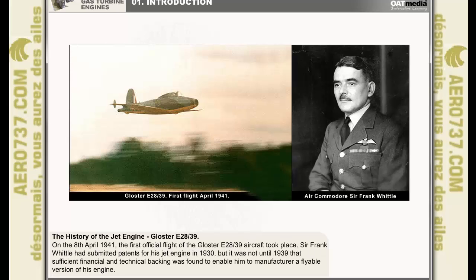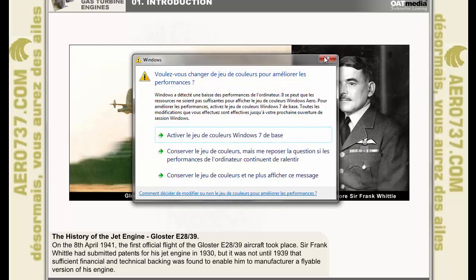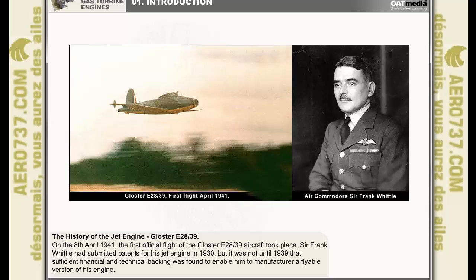On the 8th of April 1941, the first official flight of the Gloucester E2839 aircraft took place at Brockworth in Gloucestershire. Sir Frank Whittle had submitted patents for his jet engine in 1930, but it was not until 1939 that sufficient financial and technical backing was found to enable him to manufacture a flyable version of his engine.